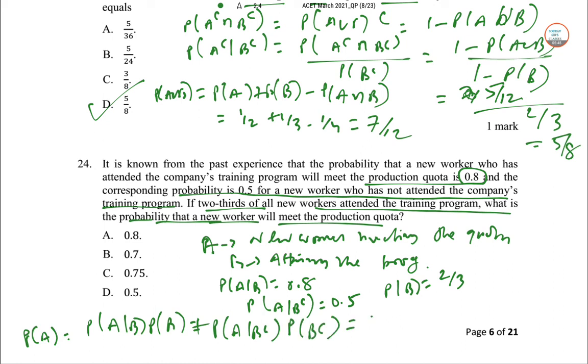So 0.8 into 2 by 3 plus 0.5 into 1 minus 2 by 3, 1 by 3. None of us will come to see 0.7. This is your answer.